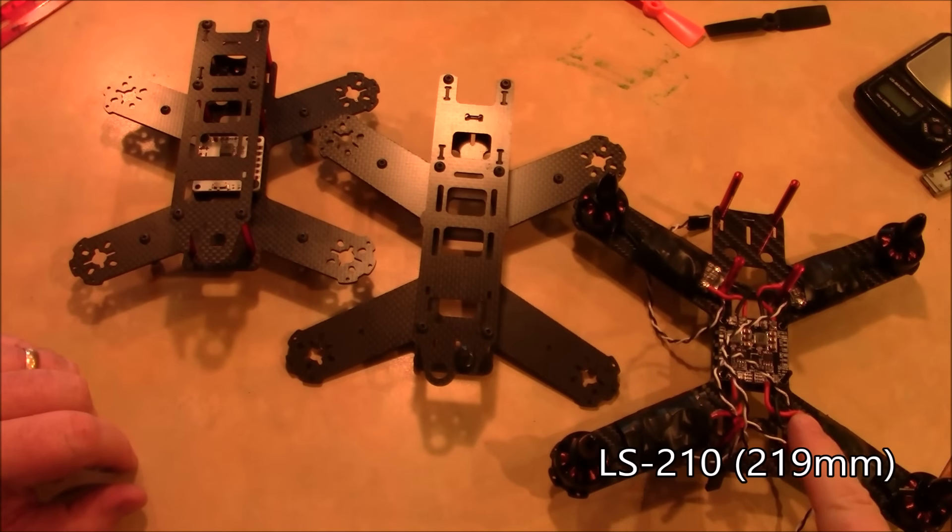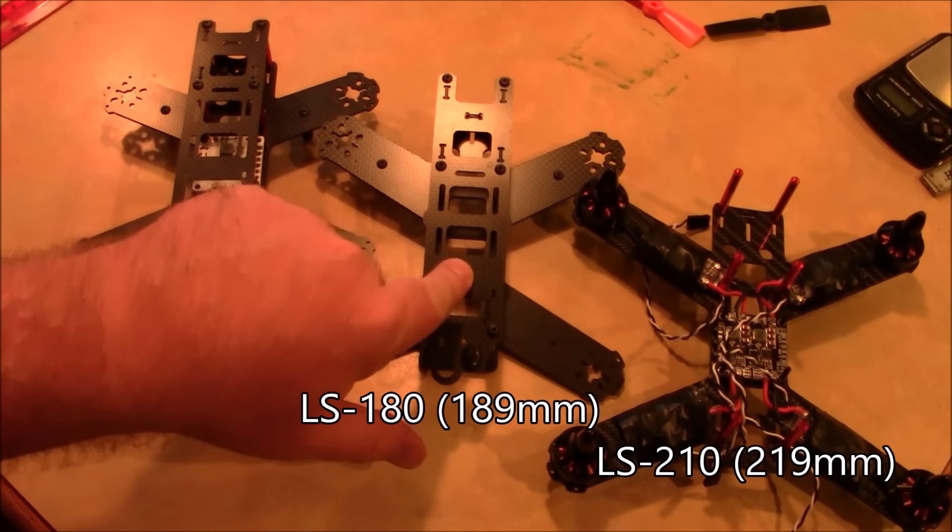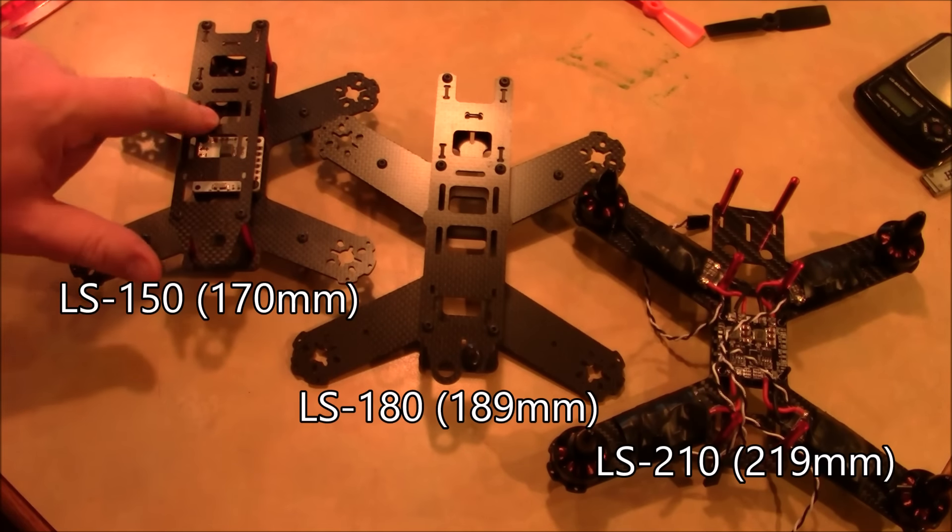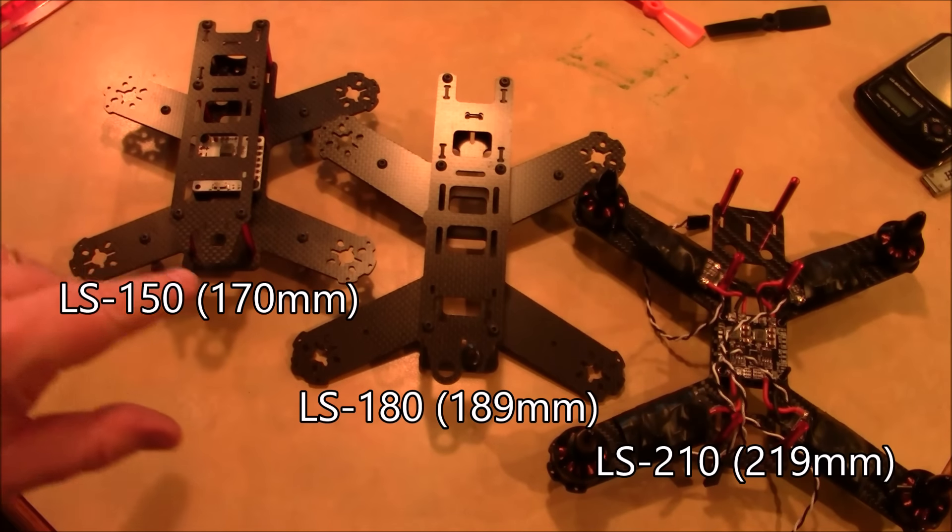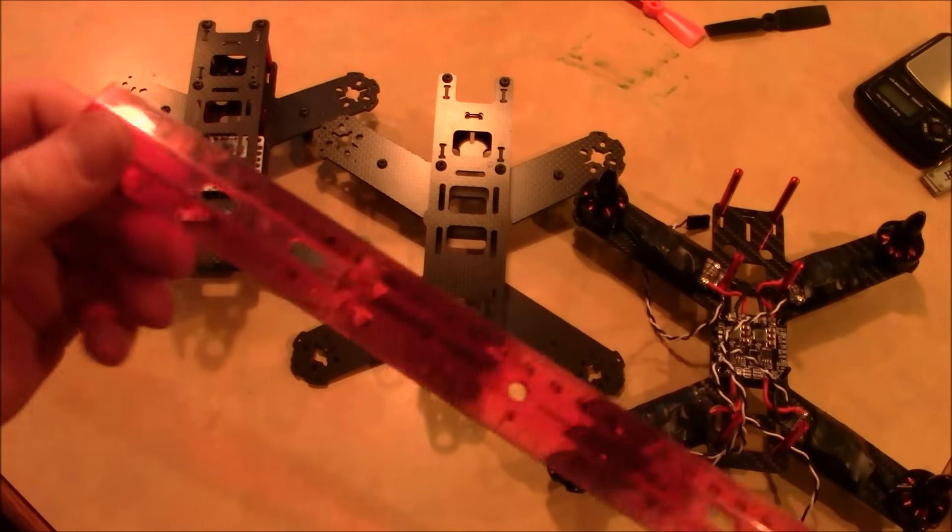This is the LS210 which actually measures out to be about an LS219. This is an LS180 that measures out to be about an LS189. This is an LS150 that actually measures out to be about an LS170. Apparently the people at Leesem are having a hard time measuring or they have a ruler that is not accurate.